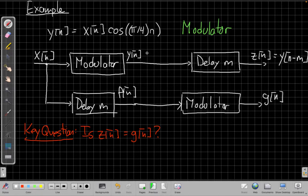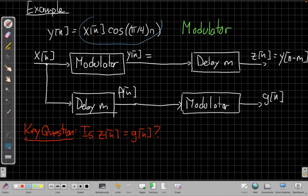Right we already saw in class that that's a delay by m samples. Then you say well I know what my original y[n] was, right y[n] follows this is my modulator system so I can take this as my relationship between the input x[n] and the output y[n].